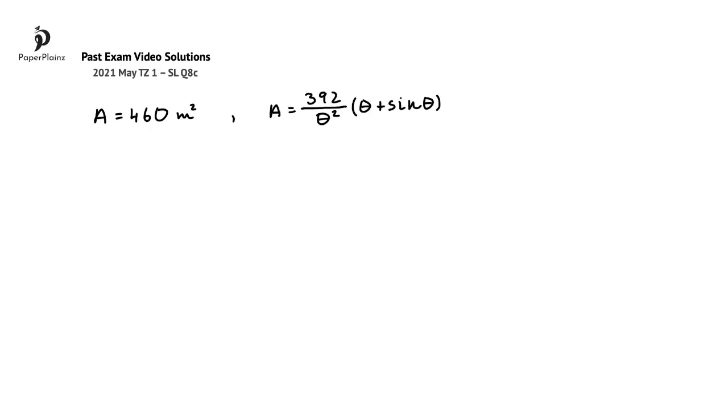In this question part, we are told that the area that can be reached by the horse is 460 meters squared. We have to find the value of theta.